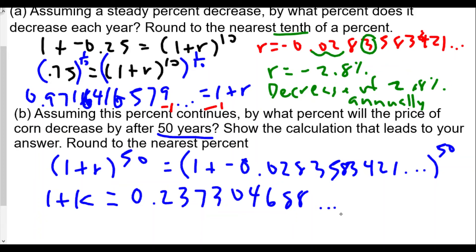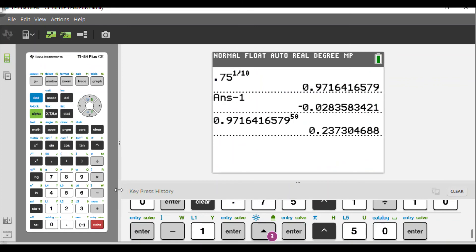So we will subtract 1 from both sides. What percent will the price of corn decrease? We take away 1, so we'll just go to the calculator, take away 1, minus 1.